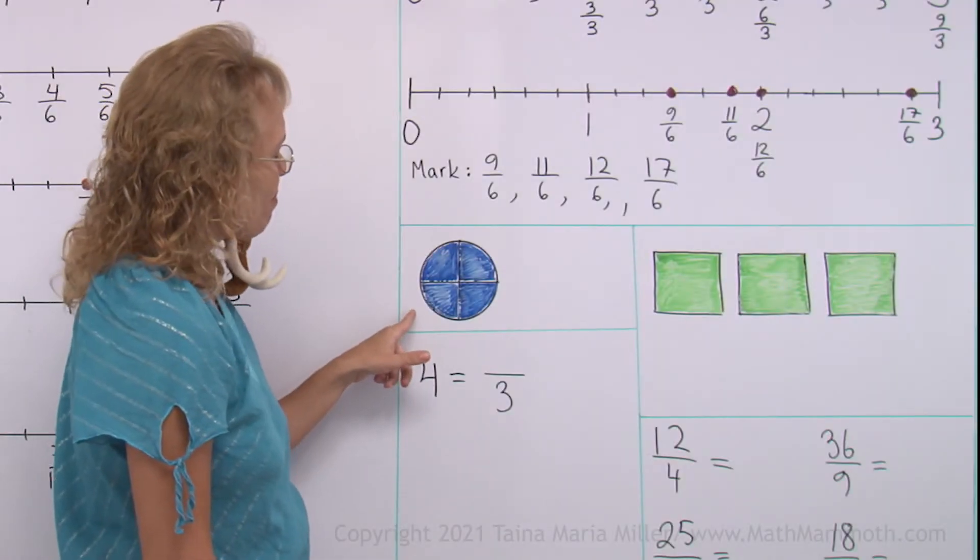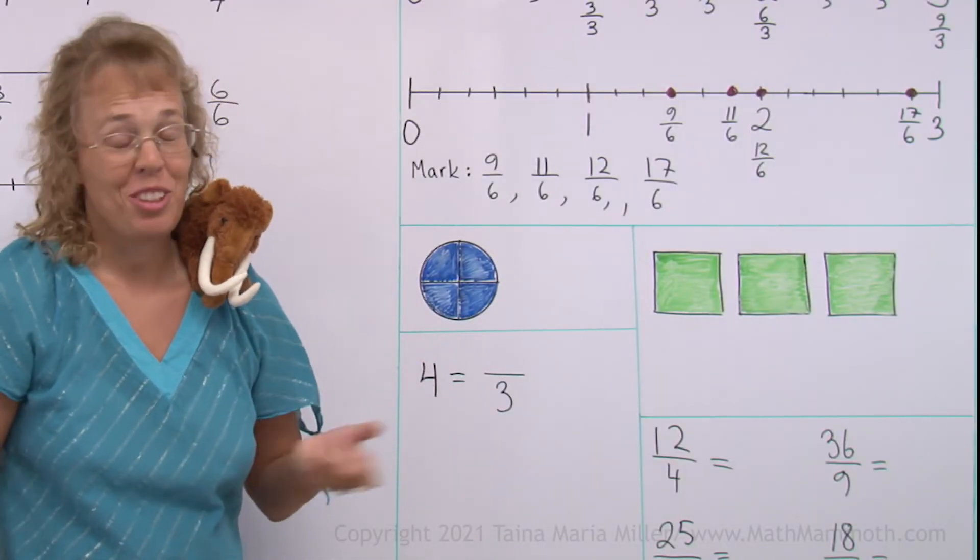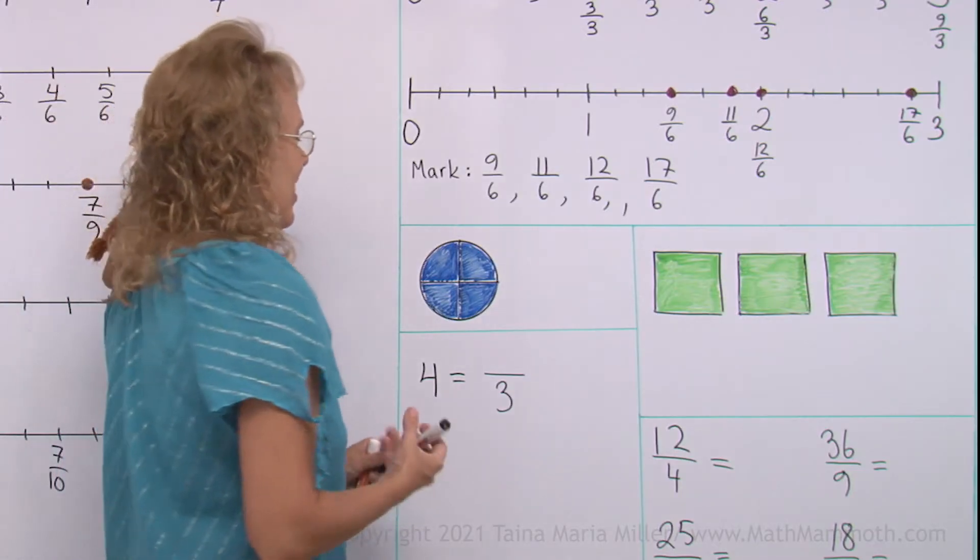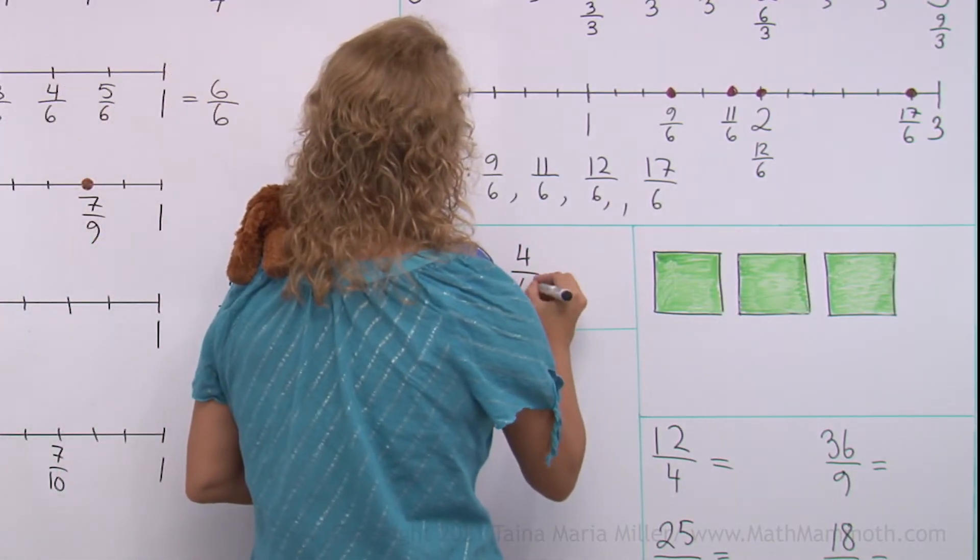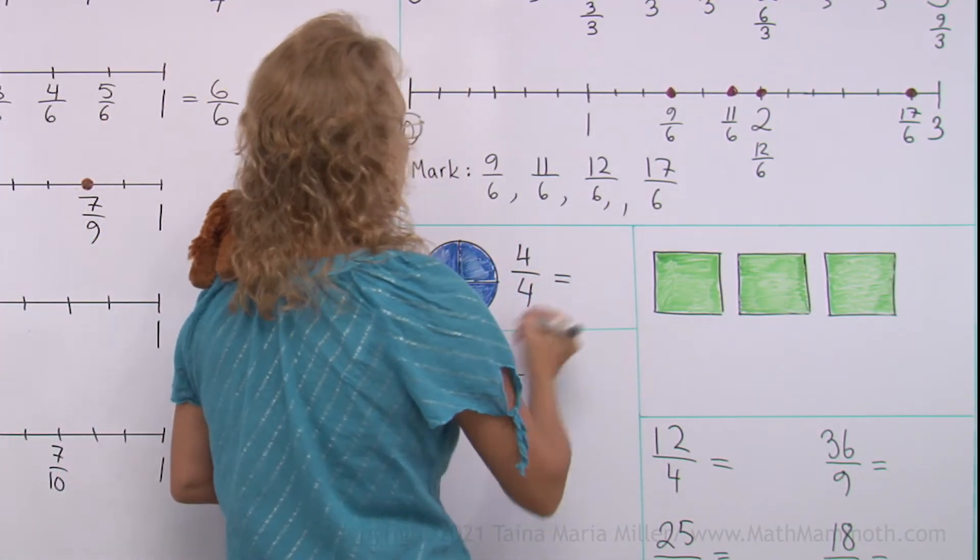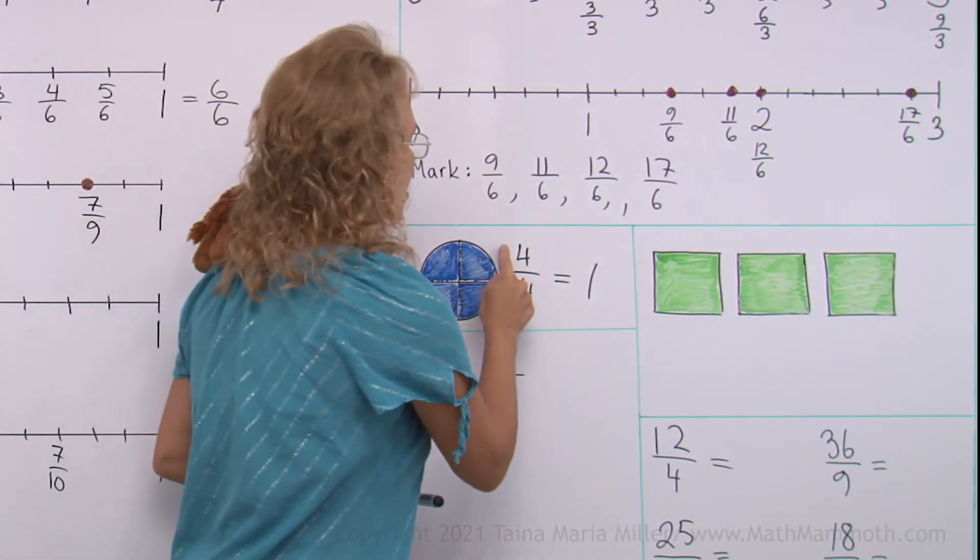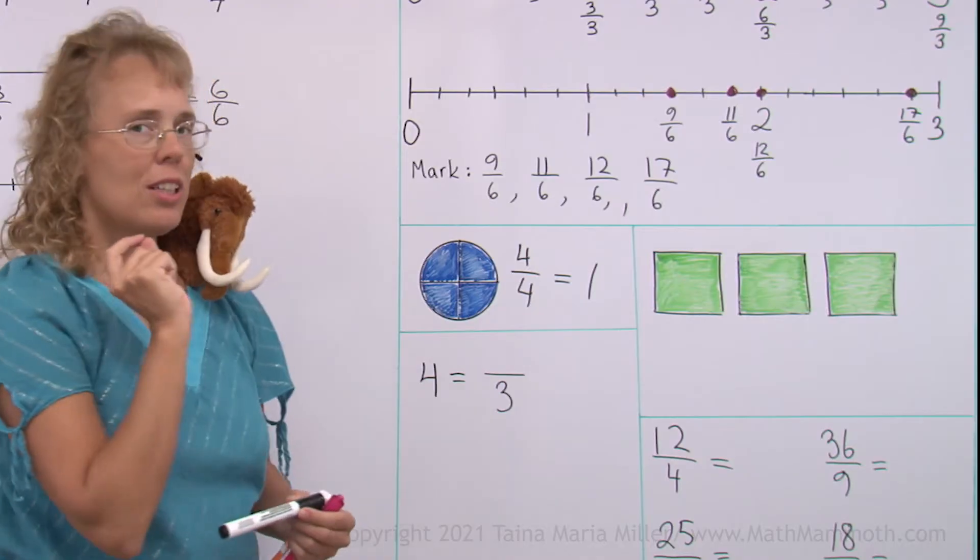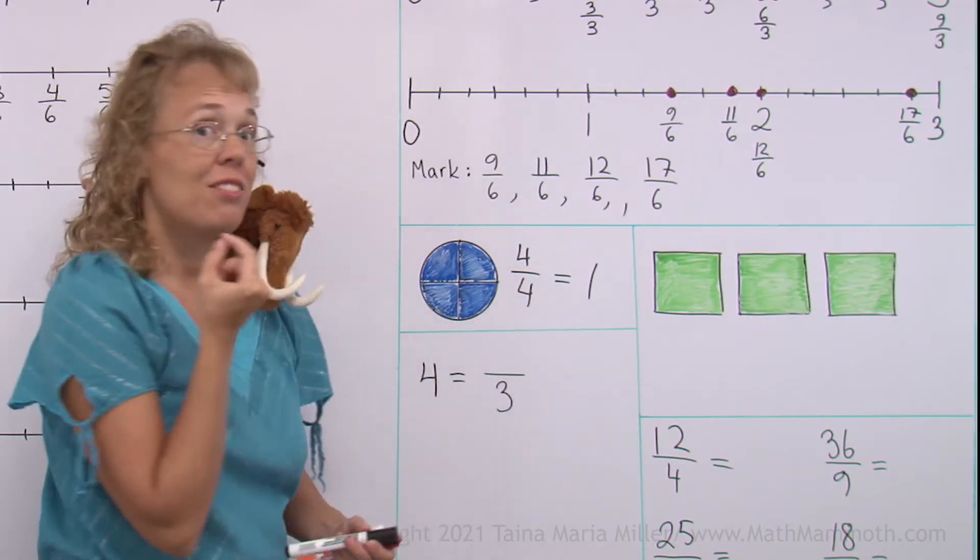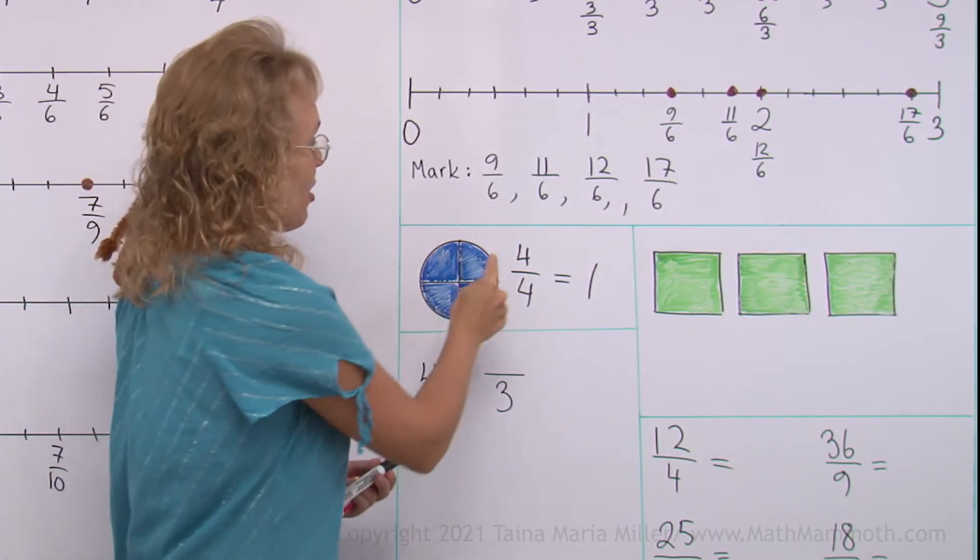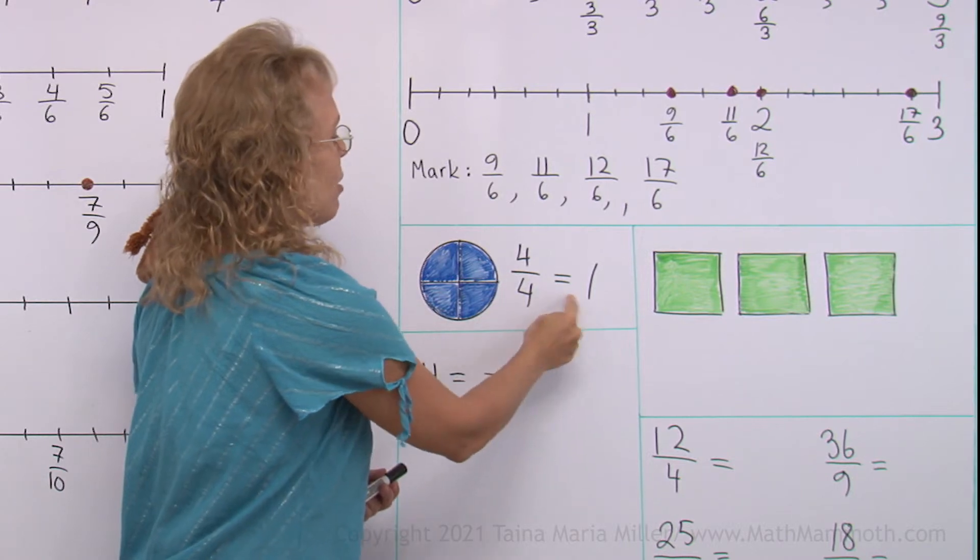Now over here, what do we have? 4 fourths, right? 4 fourths equals 1 whole. But notice, 4 fourths. I want you to think of this fraction line as a division symbol. This is also 4 divided by 4 equals 1.